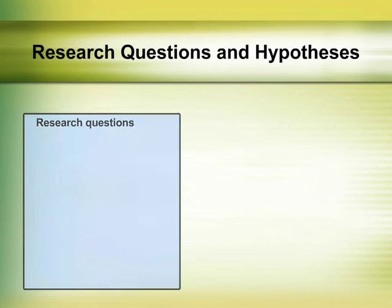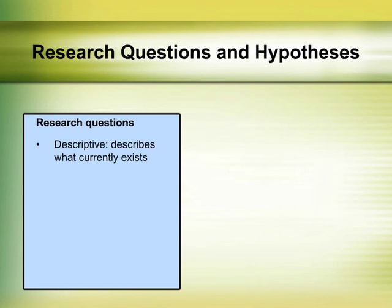In quantitative research, research questions are typically descriptive, relational, or causal. Descriptive questions constrain the researcher to describing what currently exists. With a descriptive research question, one can examine perceptions or attitudes as well as more concrete variables such as achievement. For example, one might describe a population of learners by gathering data on their age, gender, socioeconomic status, and attributes towards their learning experiences.